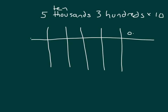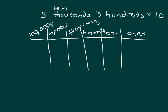Let's use the place value chart and digits to model this problem. Can you read that problem? Five ten-thousands three-hundreds times ten. Let's model this first using digits. It says five ten-thousands, so we'll place the five digit in the ten-thousands place. We also have three hundreds. That number in standard form is 50,300, and the comma goes right there — fifty thousand three hundred, multiplied by ten.